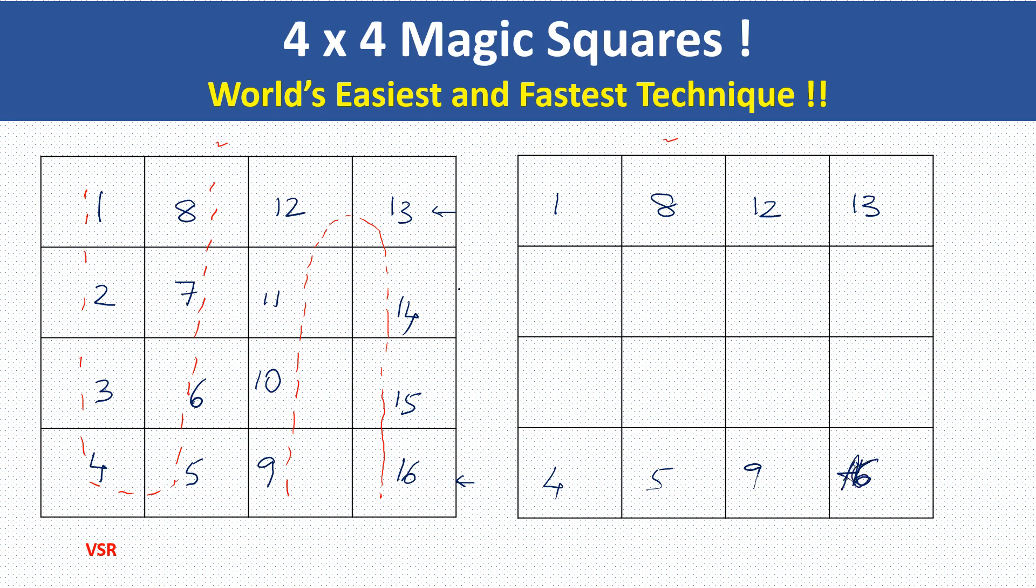Now, you see the remaining is so simple. Only the middle ones, what I do is, only the middle rows, I just transpose this. That is what is Paravartya Yojaya. This row, instead of writing 2, 11, I just write it as 14, 11, 7 and 2. Same thing here, 15, 10, 6 and 3. That's all. Only these two rows. Remaining everything is same. Your magic square is over.